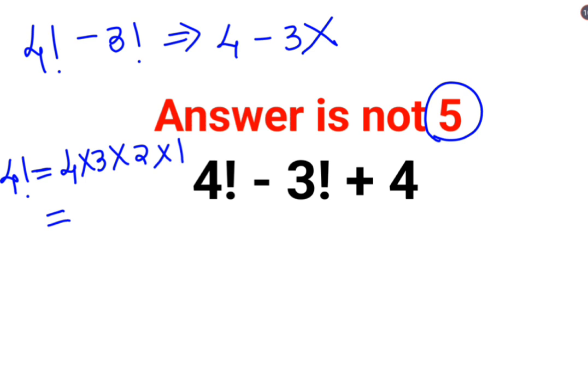So 4 factorial comes out to be 24. 3 factorial is basically 3 multiplied by 2 multiplied by 1. So the answer is 6.